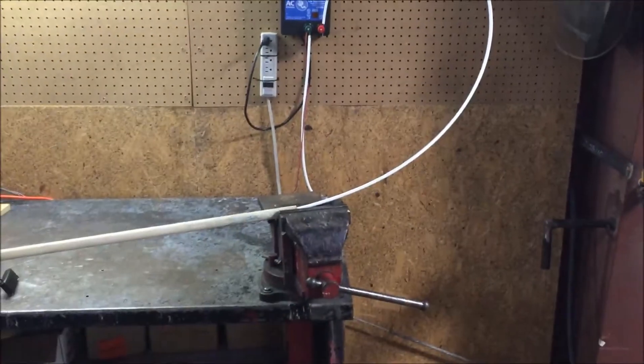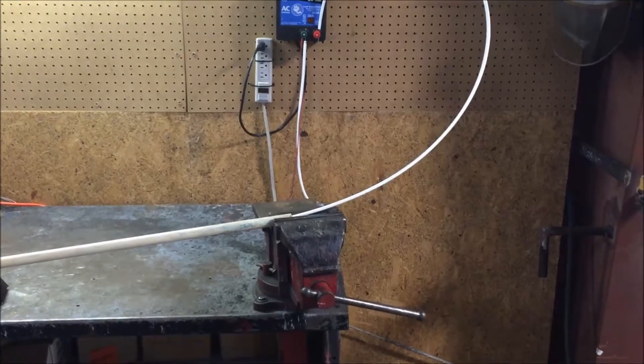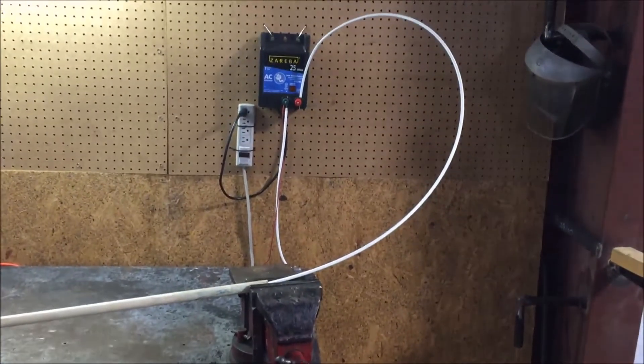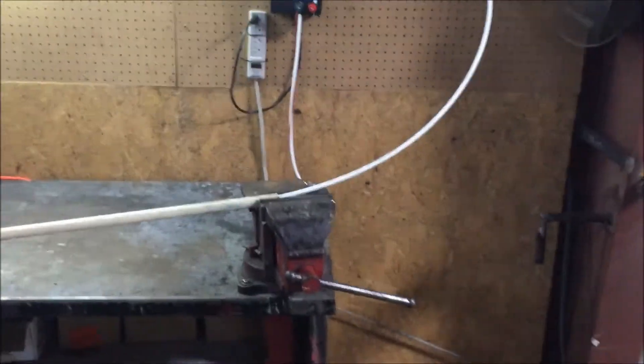You can also see that the vise is grounded through the metal table as well. We put about a five-foot loop through a PVC pipe, that way we can test each leg.